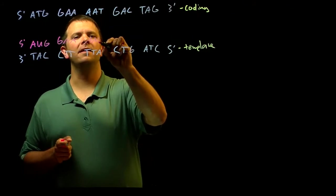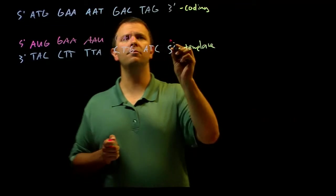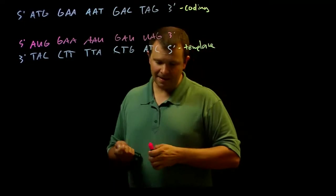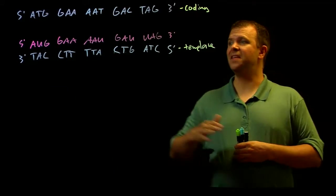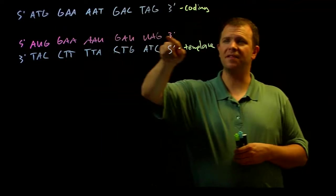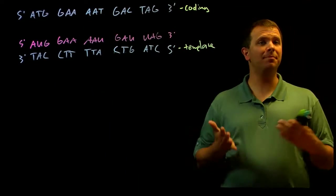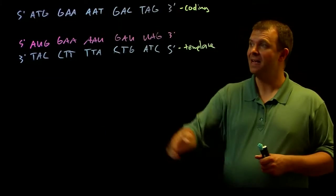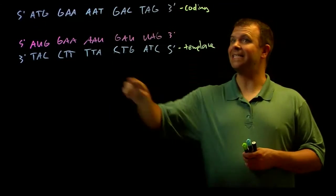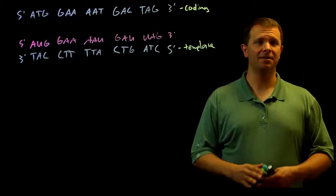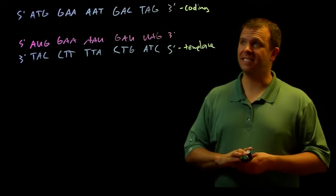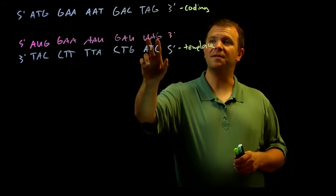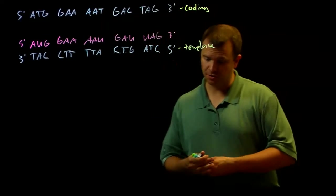GAA, AAU, GAU, UAG, 3 prime. And you'll note that the sequence of the RNA, which was made using the template strand, right, the template strand was the template for synthesizing the RNA. The sequence of the RNA is exactly the same as the coding strand sequence, with the notable exception that every time there's a thymine in the coding sequence, the base in the RNA is a uracil instead.